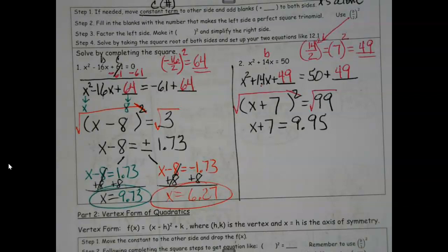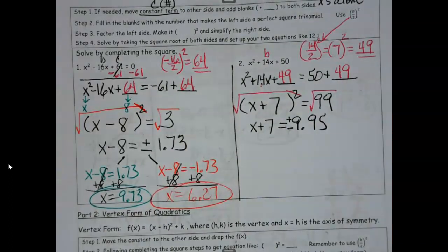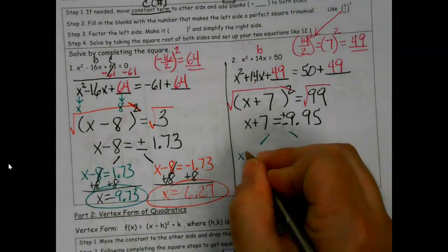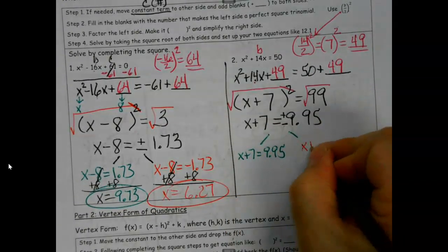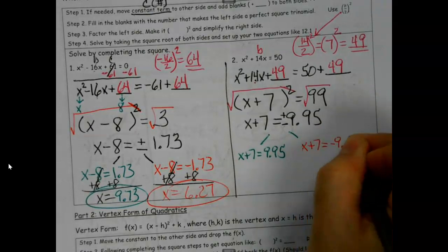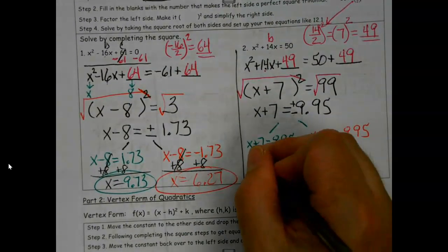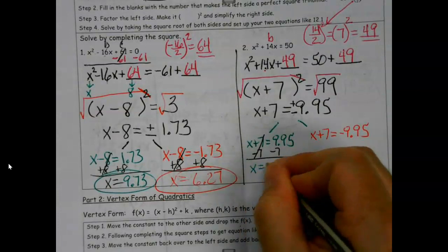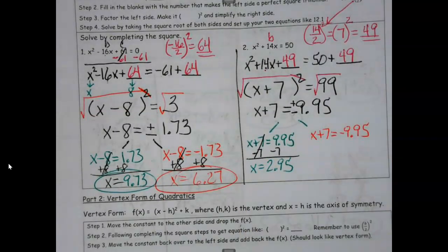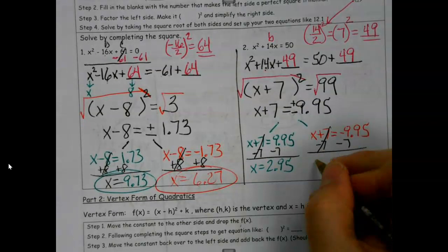The square root will cancel the squared. I'm good with either - don't make it 10, but one or two decimal places is fine. I almost forgot the important part: I've got plus-minus here. So we're going to split it into two: positive for one answer, negative for the other.